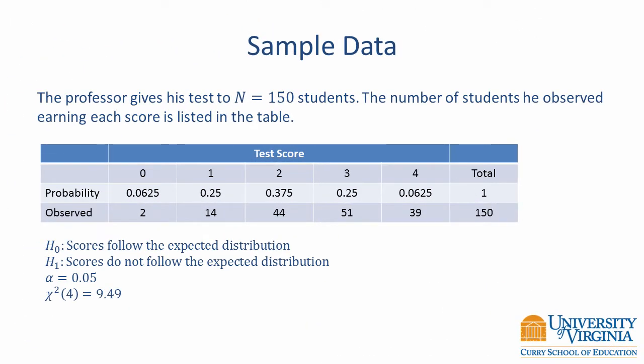The professor gave his test to 150 students. The number of students he observed earning each score is listed in the table. For example, two students earned a score of 0, 14 students earned a score of 1, and so on.